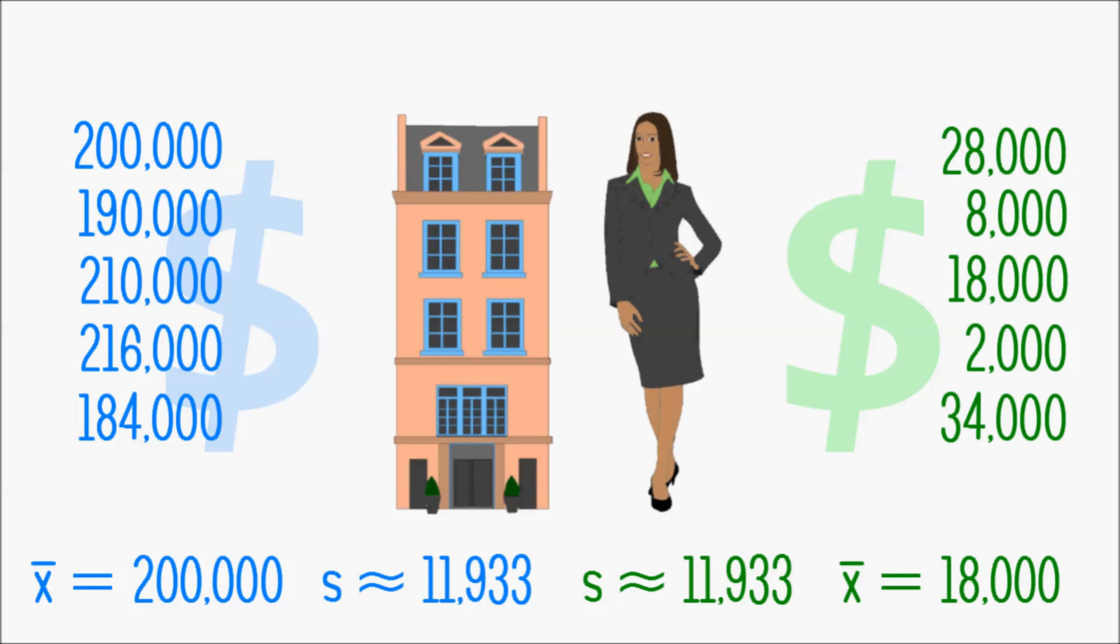A standard deviation of let's say $12,000 around an average of $18,000 can be very different from a standard deviation of $12,000 around an average of $200,000.